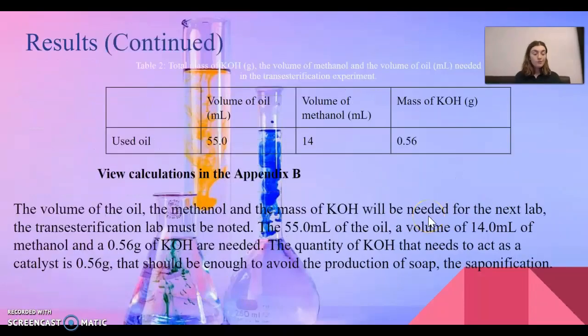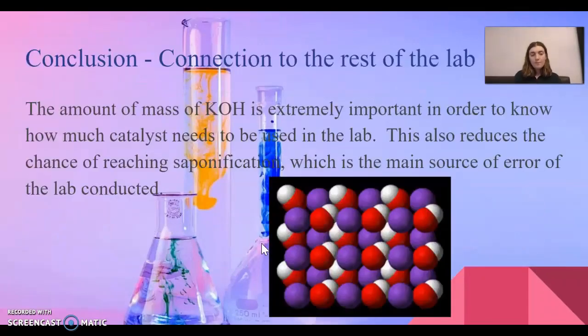Once the first part of your results are done, it's time to move to the second part, where we find the mass of KOH. This is extremely important because this exact mass is going to be used for the second lab in order to determine the amount of KOH catalyst needed in that solution.